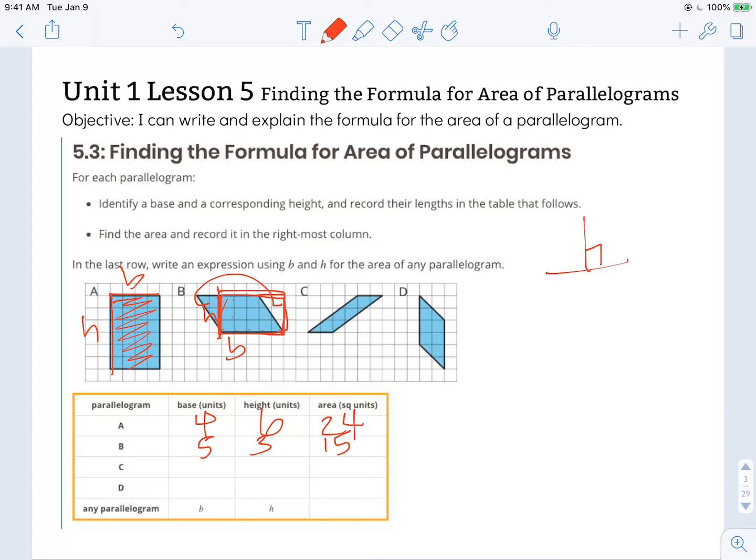I could do the same kind of thing with C and D. Again, with D, I could label this as my base. I could cut off this triangle right here and move it to this other side. And so then that cut that I just made could be my height. And my base in this case is 1, 2, 3, 4. And my height is 2. For a total number of squares inside that parallelogram is 8.